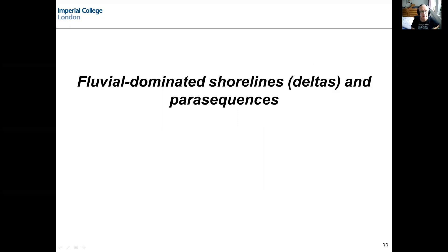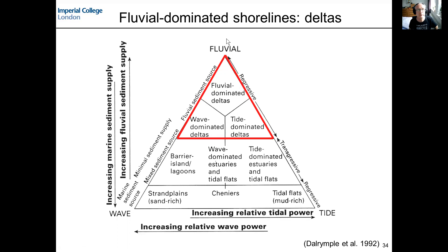Now we're going to think about a second type of shoreline dominated by river mouth processes — here we're thinking about deltas. Thinking back to our triangular classification with fluvial or river mouth processes, wave and tidal processes at the three corners, we're looking at the part of the triangle closest to the fluvial section, with different types of deltas depending on the degree to which there's some influence of waves and tides.